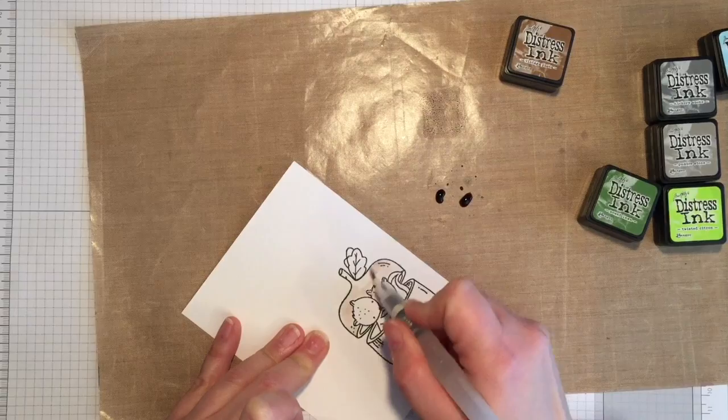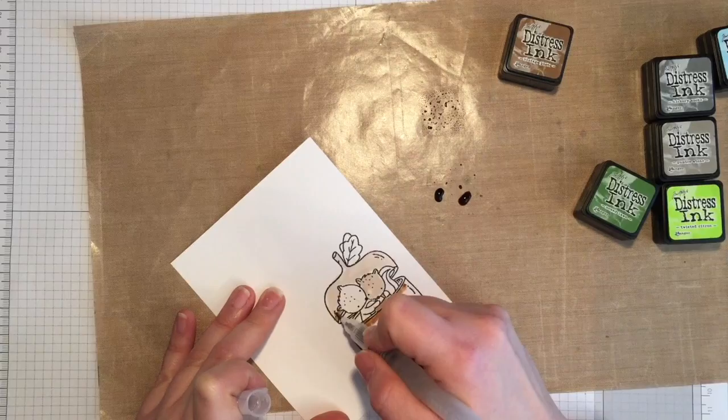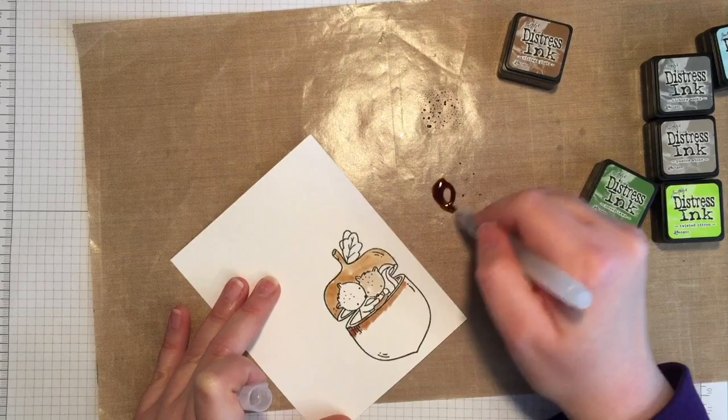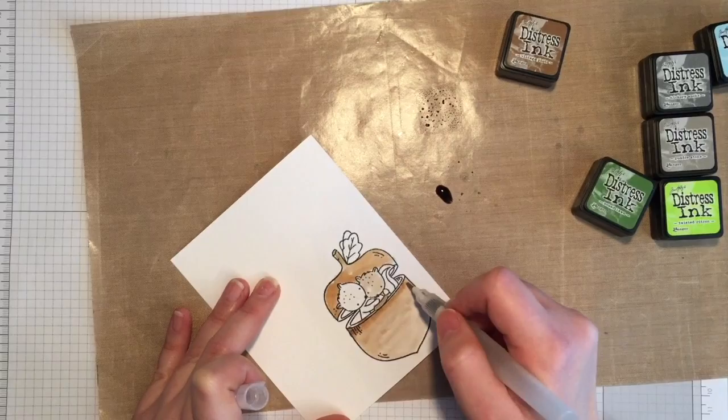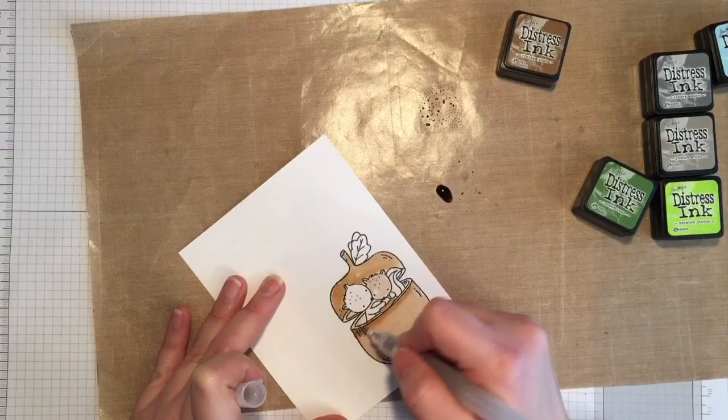And then I'm going to take the ground espresso and I'm going to be doing another layer over the cap after I finish with the vintage photo just to give it some depth and dimension. I'm also going to be using the ground espresso to do the inside of the cap to give it some shadow in there as well.